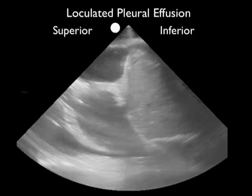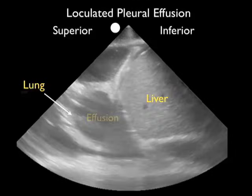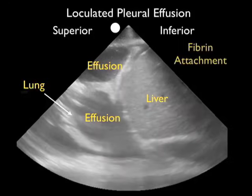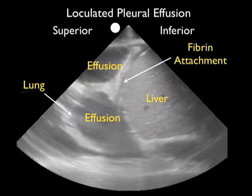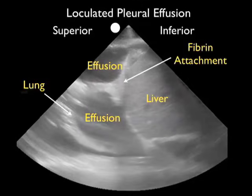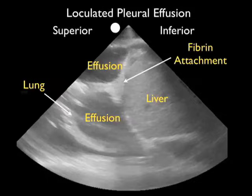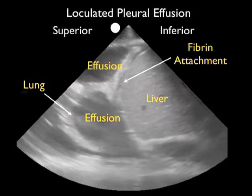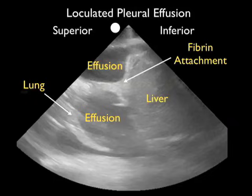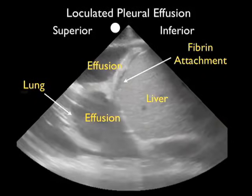Just to emphasize the point that it's very important to look with sonography prior to performance of a thoracentesis procedure — this pleural effusion is taken from the right chest. We see the liver towards the inferior aspect of the patient, and we note above the diaphragm, which is moving up and down as the patient breathes, the presence of a dark or anechoic fluid collection. But we also see lung within the pleural effusion and a fibrinous attachment that attaches the lung down to the diaphragm. So this could be a potentially complicated thoracentesis, as a needle going into that chest cavity could be pushed by that fibrinous attachment up into the lung causing a pneumothorax.